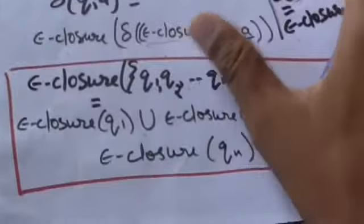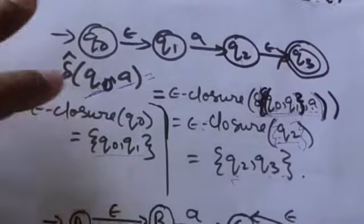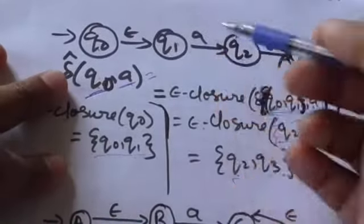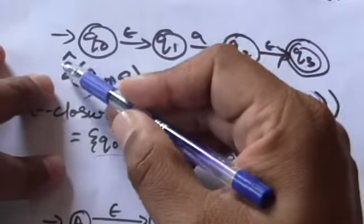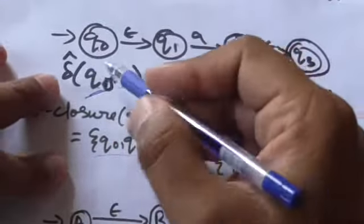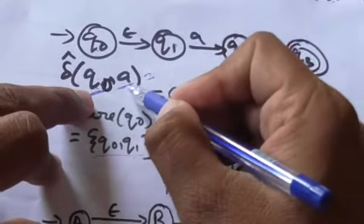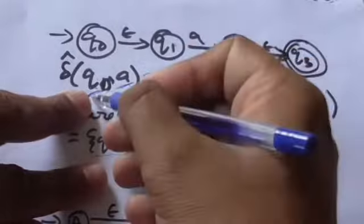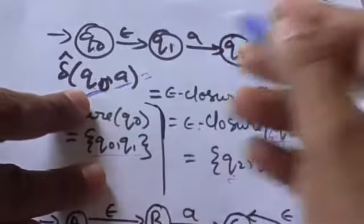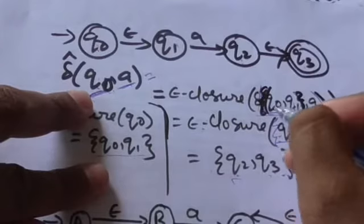It would be more clear after this example. In this NFA with empty transitions, we have to find the output of the extended transition function from present state q0 and input symbol a. First, find the empty closure of present state q0 — it will contain two states: q0 and q1.